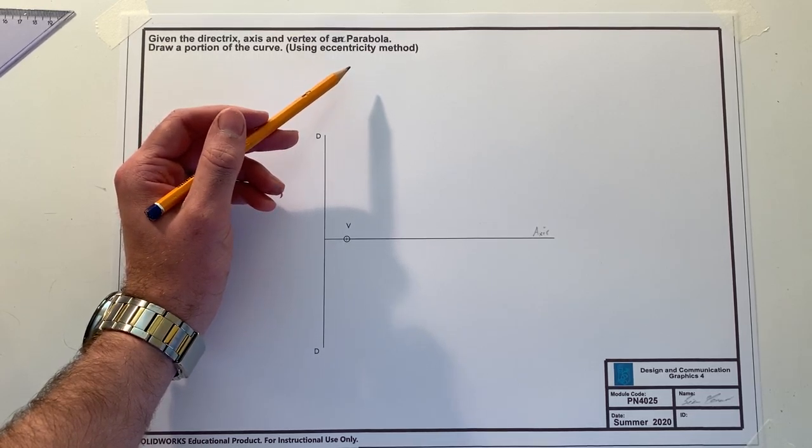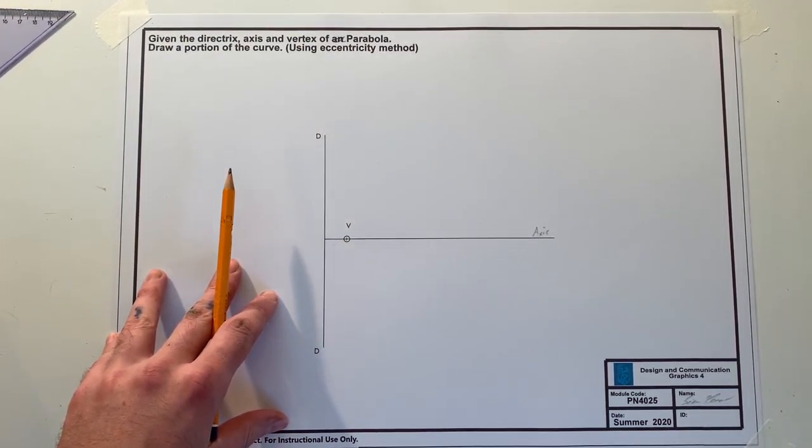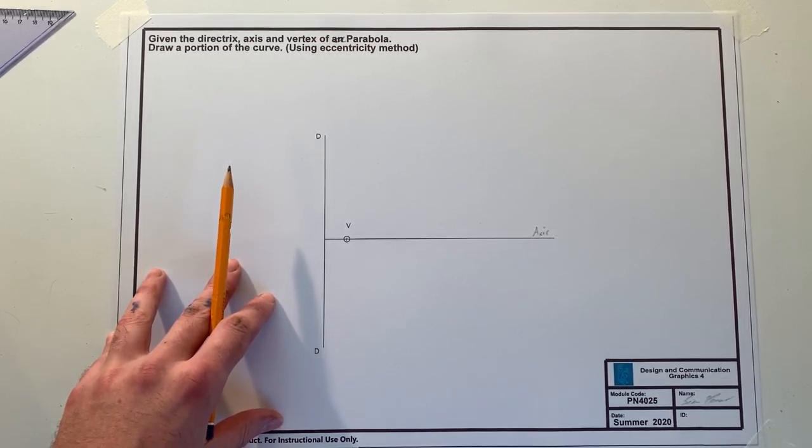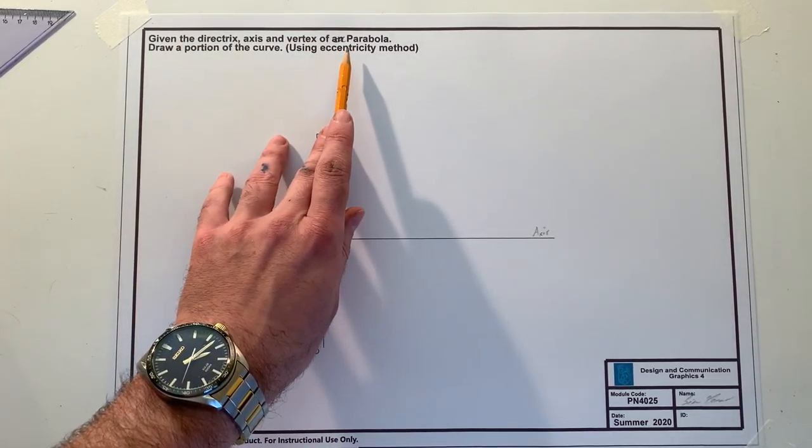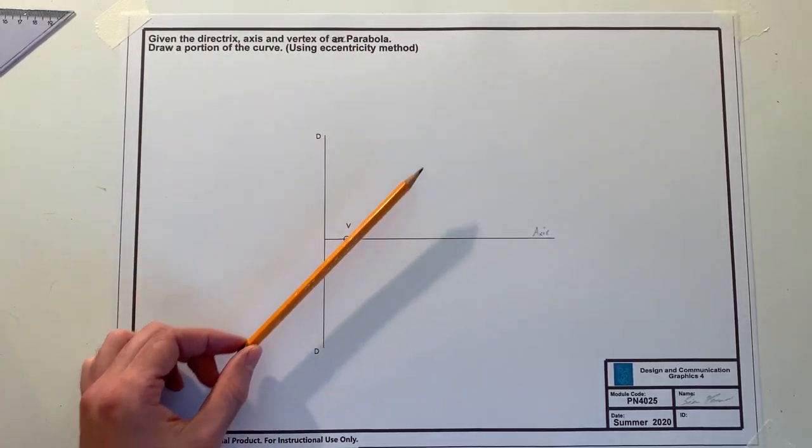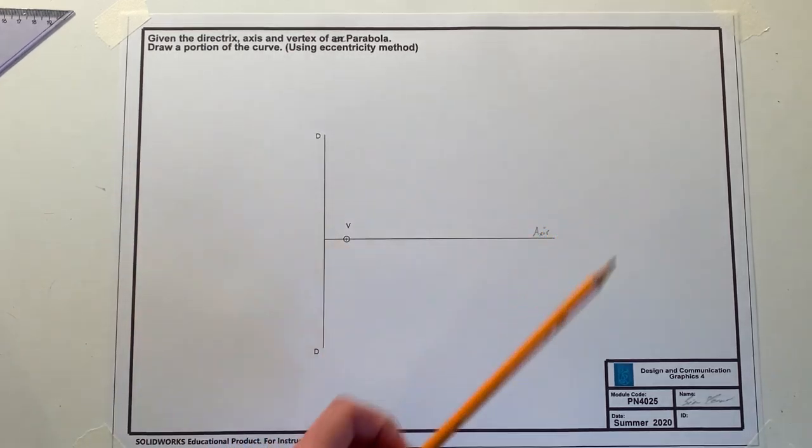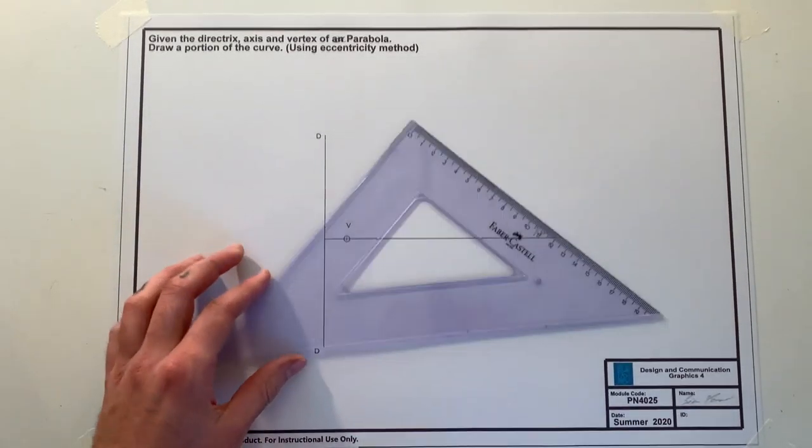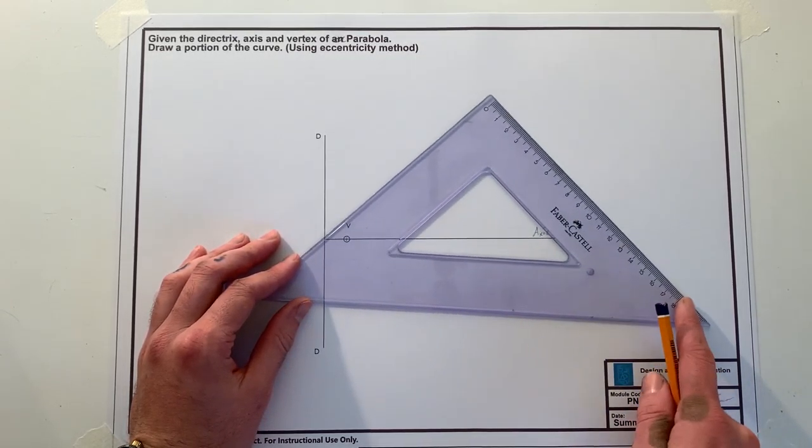Now for conics what we should know by this point is that a parabola has an eccentricity of one, while a hyperbola has over one and an ellipse has less than one. So if it has one we know that we can travel our eccentricity line from where our axis sits our directrix at 45 degrees.